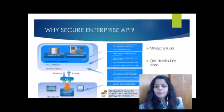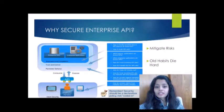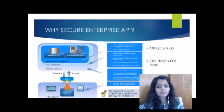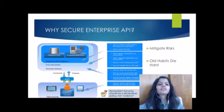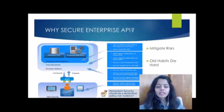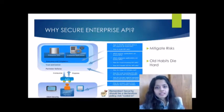APIs might represent increased risk for the enterprise, but the potential benefits they can bring to an organization can overshadow any inherent dangers. APIs by definition are an abstraction from an actual service — interaction with an API requires a protocol break, meaning information consumers are connecting to the API rather than to the back-end systems directly. Classic cybersecurity doesn't provide visibility into what is coming in and going out of the back-end applications protected by APIs.